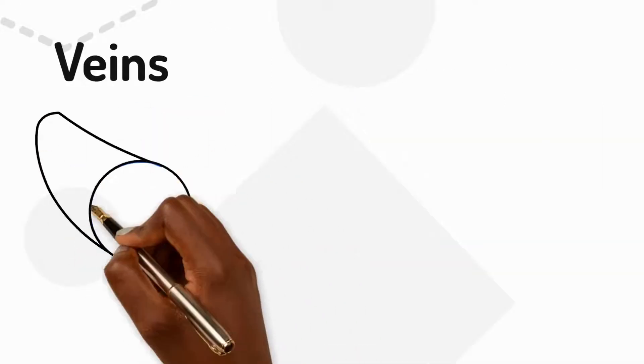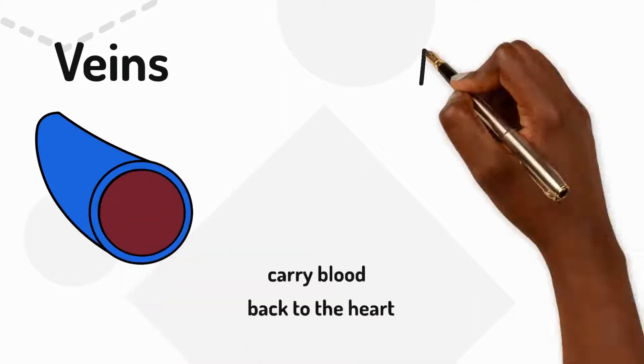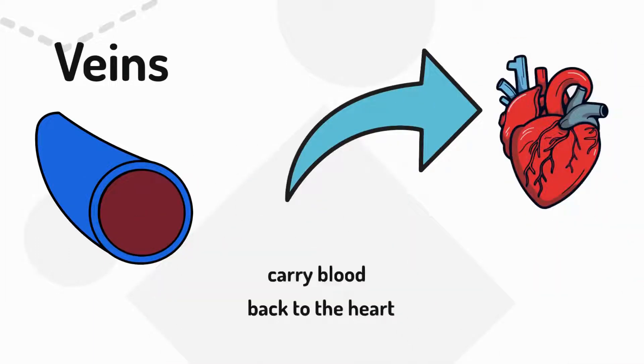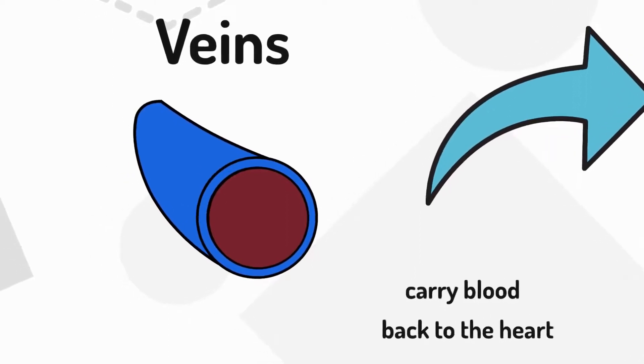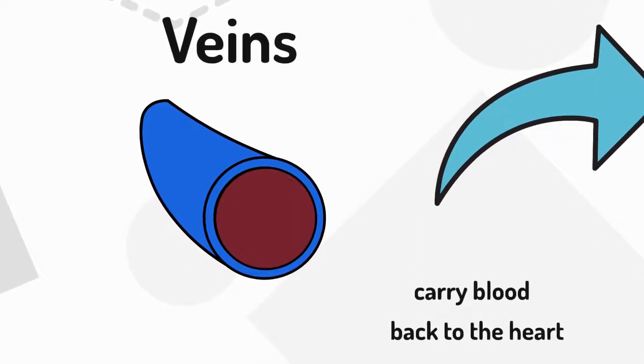Veins are the vessels that carry blood back to the heart, once the body has used up the oxygen and produced waste. We often see this blood colored blue to show that it does not have much oxygen. However, it's actually dark red in color.